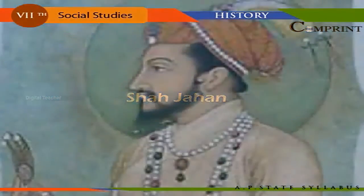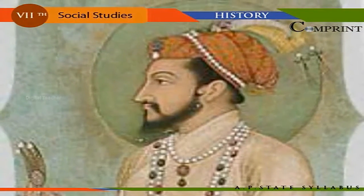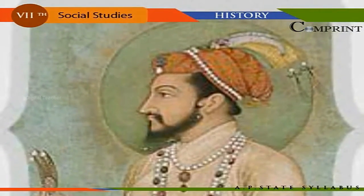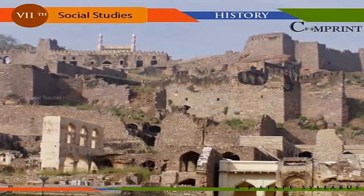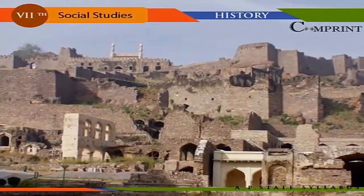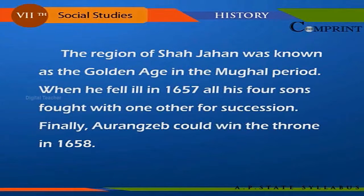Shah Jahan. Kurram, with the title Shah Jahan, ascended the throne in 1628. He could retain the empire which he inherited from his forefathers. The Deccan kingdoms of Bijapur and Golconda became feudatories. The reign of Shah Jahan was known as the Golden Age in the Mughal period. When he fell ill in 1657, all his four sons fought with one another for succession. Finally, Aurangzeb could win the throne in 1658.